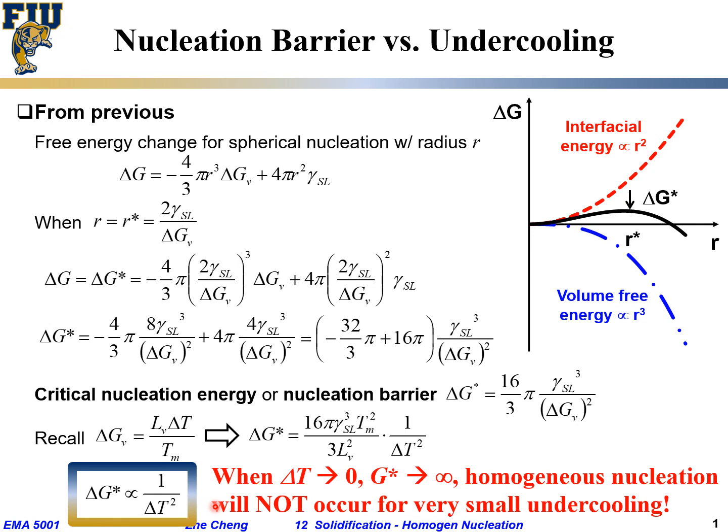This is another way to say when ΔT goes towards zero, which means we are getting closer to the equilibrium melting point, the ΔG* goes towards infinity. This means you cannot climb up the hill, which means homogeneous nucleation for solidification will not occur under small undercooling. Small undercooling is when ΔT is small, very close to zero, which means we are just barely below the melting temperature.